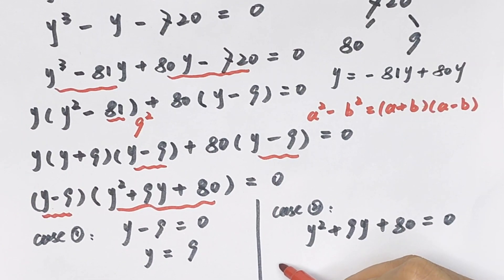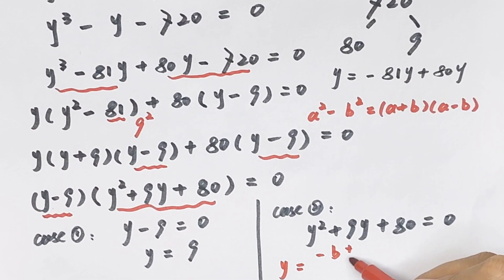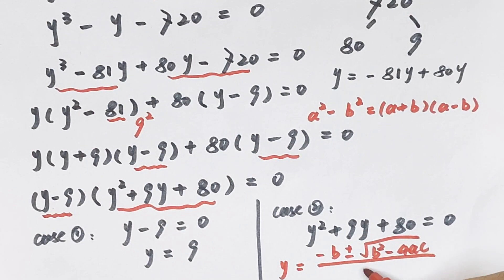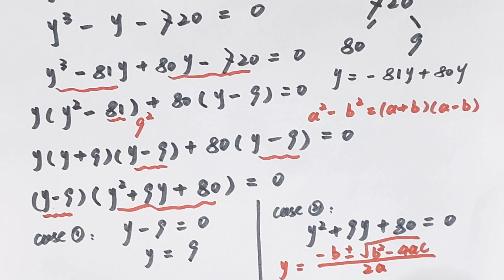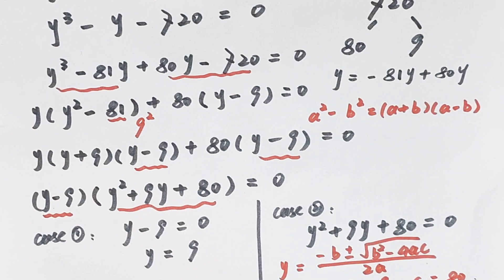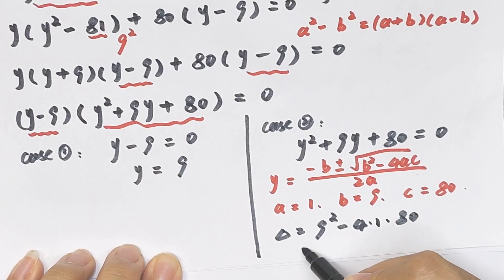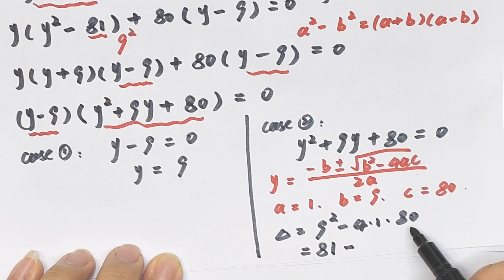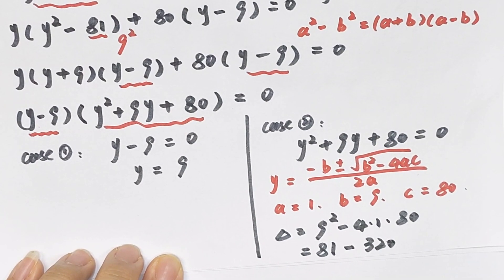Case 2 is y squared plus 9y plus 80 equals 0. We apply the quadratic formula: y equals negative b plus or minus square root of b squared minus 4ac, over 2a. Here a equals 1, b equals 9, and c equals 80. So the discriminant is 9 squared minus 4 times 1 times 80, which equals 81 minus 320.